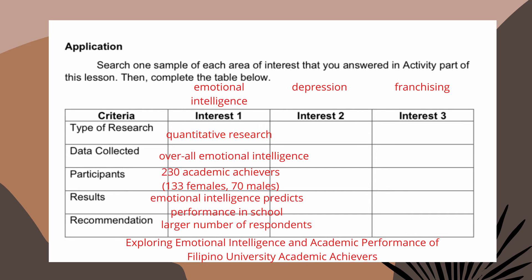If the study does not use statistics and figures, that is a qualitative research. The data collected is the overall emotional intelligence of 230 academic achievers, where 133 of them are females and 70 are males. The result states that emotional intelligence predicts performance in school. The recommendation, usually found after the discussion of results and conclusion, is to use a larger number of respondents.